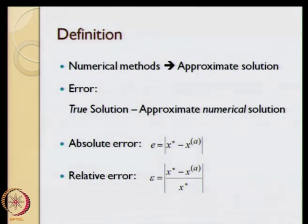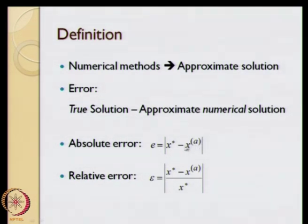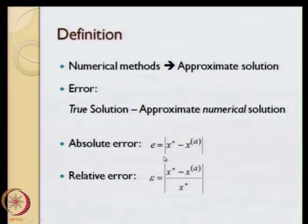We are going to use two different definitions of error. One is the small e, which is just the difference between x star — where x star represents the true value of the solution — and x_a, which represents the approximate value of the solution. We do not want to bias ourselves to positive or negative values, so we are going to use the absolute value of the difference as our definition of error. This is what is known as the absolute error.